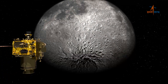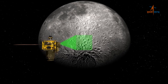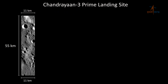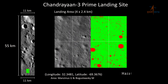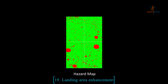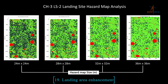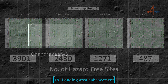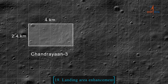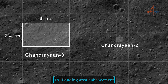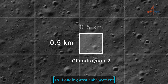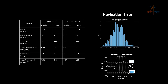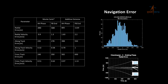The landing site of Chandrayaan-3 is selected utilizing images from the OHRC of Chandrayaan-2. The 0.32 m resolution of OHRC images is the best resolution imagery of the Moon available globally. A Digital Elevation Map (DEM) developed using OHRC images helped increase the landing site area in Chandrayaan-3 to 4 km by 2.4 km, compared to 0.5 km by 0.5 km for Chandrayaan-2, enabling handling of wider dispersions in along and across range at touchdown.